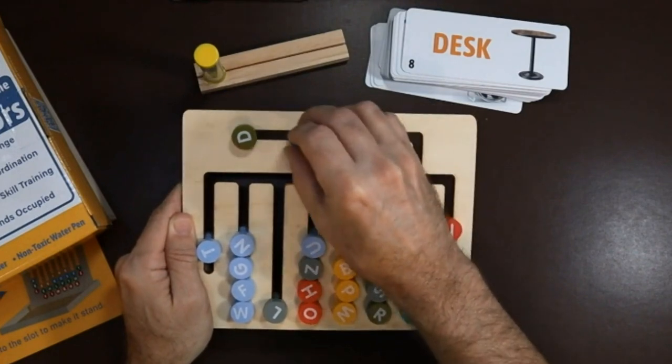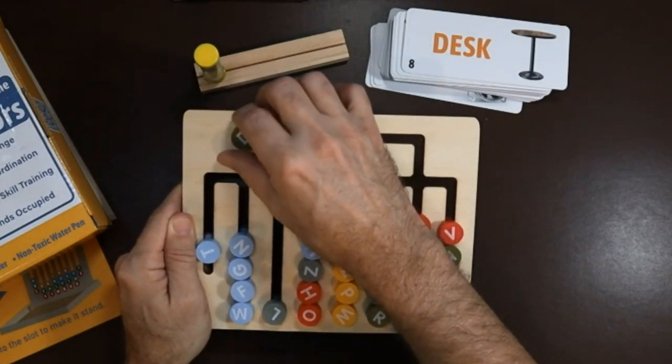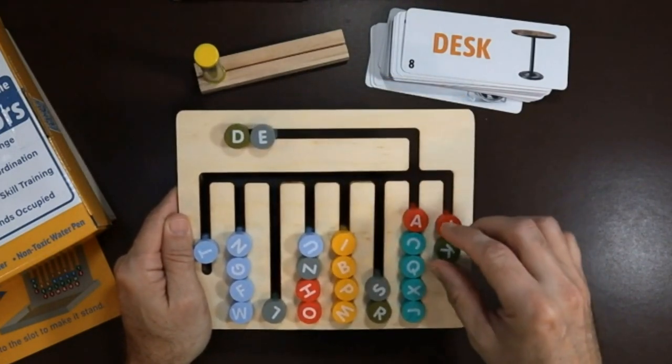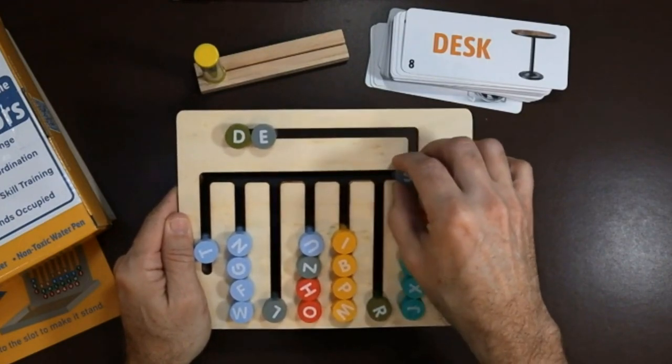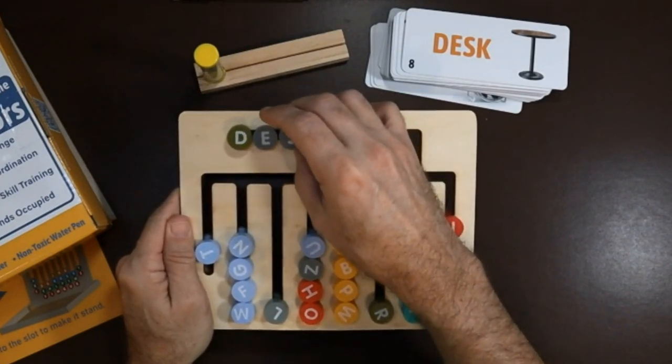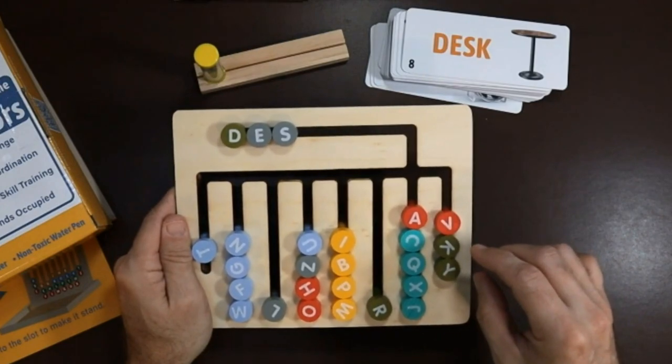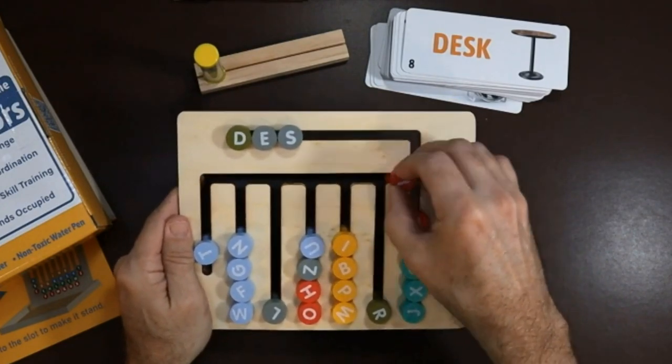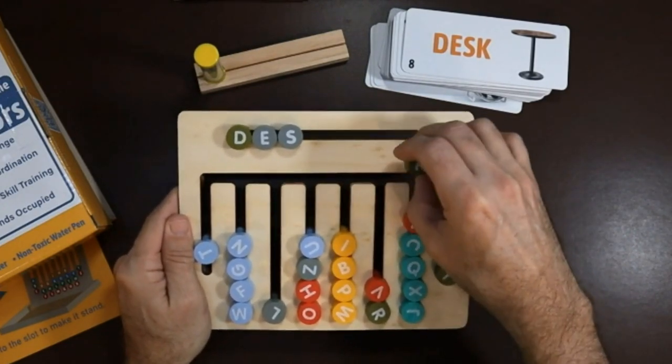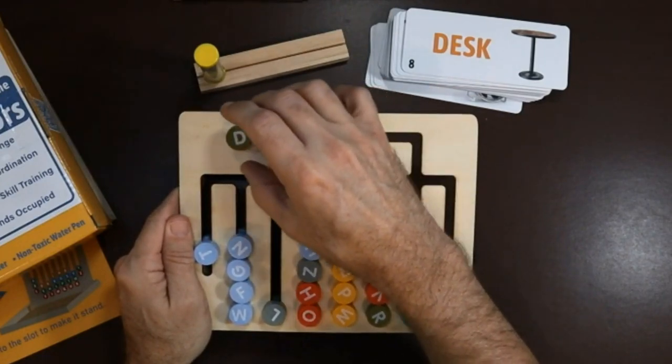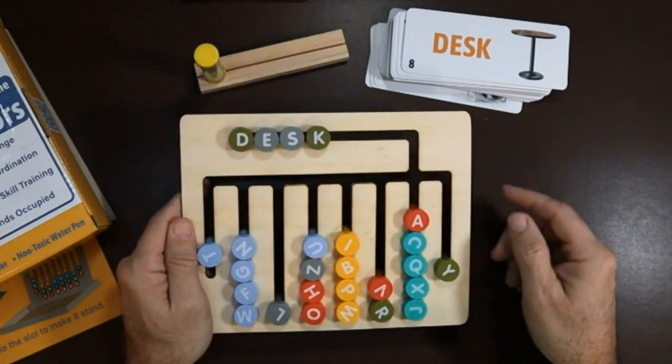This is even a game I could see the grandkids or great grandkids or other kids that are around would enjoy playing with them. So it's a great way to help have some bonding time as well. S and then our K is over here. So then we've got the word desk.